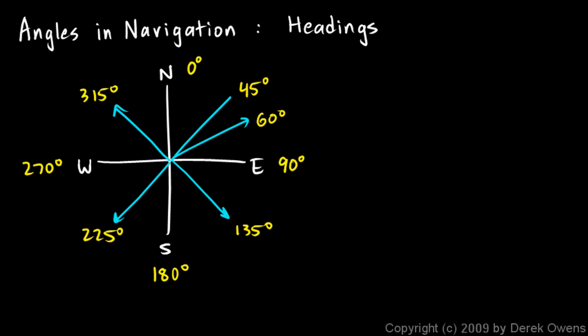Now you can see immediately that this is different from the way a mathematician specifies angles. Mathematicians are dealing with the xy plane, and we've seen that mathematicians always start at the x-axis and rotate counterclockwise. So this is a 0 degree angle right there along the x-axis. 45 degrees is right there.